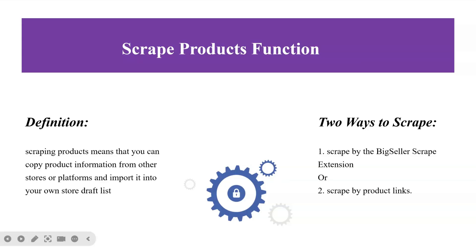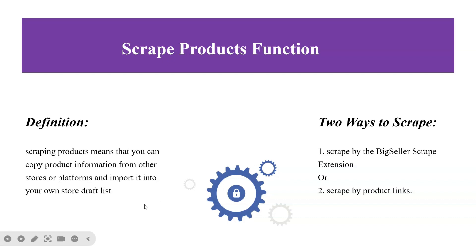Hello everyone. This video is about how to scrape products, which means that you can copy product information from other stores or platforms and import it into your own store draft list. There are two ways to scrape: by the BigSeller Scrape Extension or by product links.